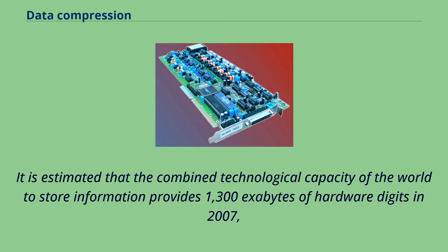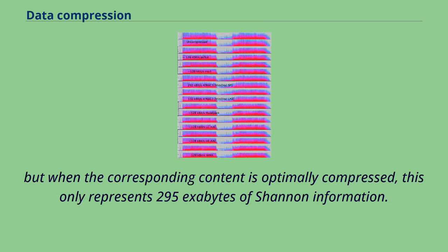It is estimated that the combined technological capacity of the world to store information provides 1,300 exabytes of hardware digits in 2007. But when the corresponding content is optimally compressed, this only represents 295 exabytes of Shannon information.